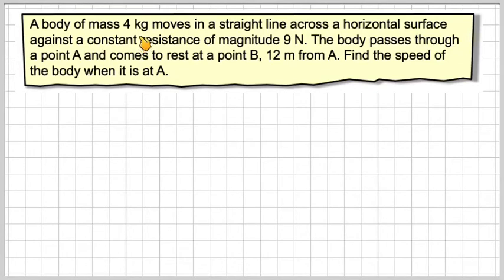A body of mass 4 kilograms moves in a straight line across a horizontal surface against a constant resistance of magnitude 9 newtons. The body passes through a point A and comes to rest at point B, 12 meters from A. Find the speed of the body when it is at A.